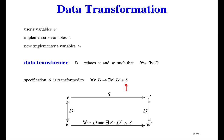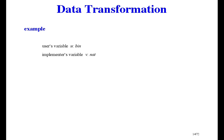We need an example — this is the simplest one I can think of. The user has a binary variable u, and the implementer has a natural variable v. There are three operations: operation zero sets v to zero, operation increase increases it by one, and operation inquire asks if it's even or odd and assigns the answer to the user's variable. So that's what the user can do: maybe start with zero, then increase a few times, then see if it's even or odd.